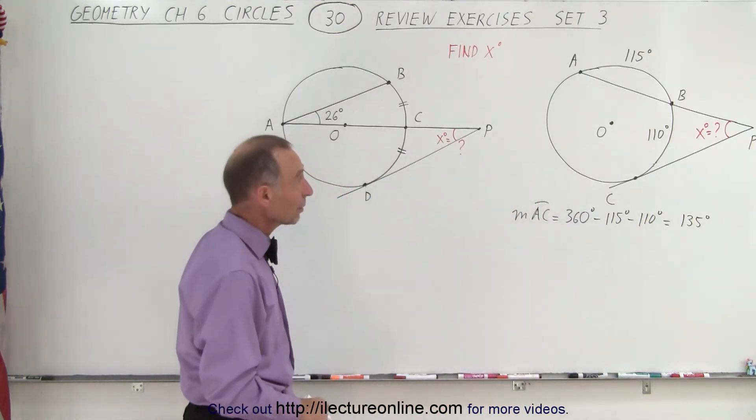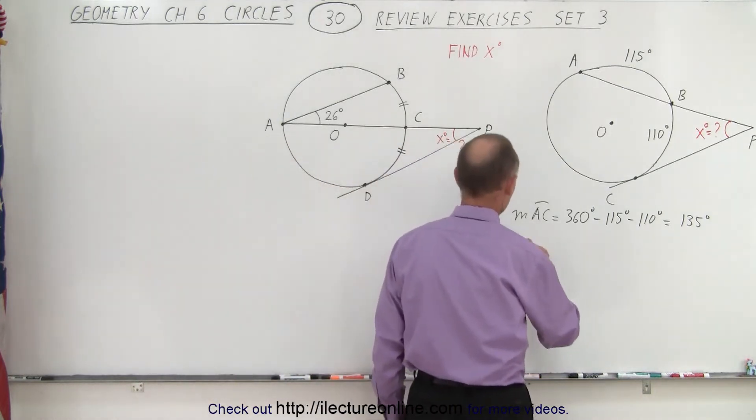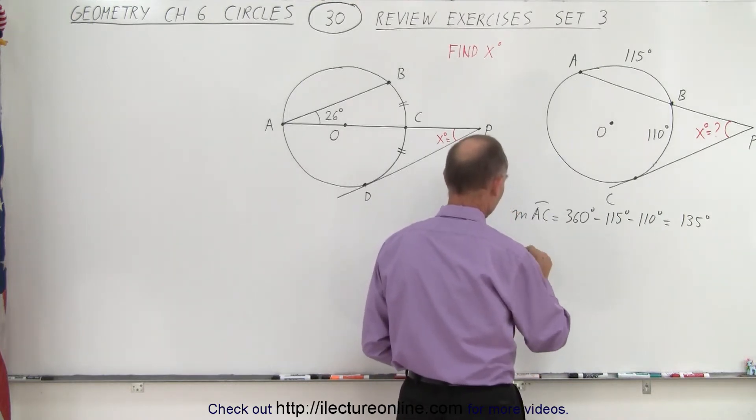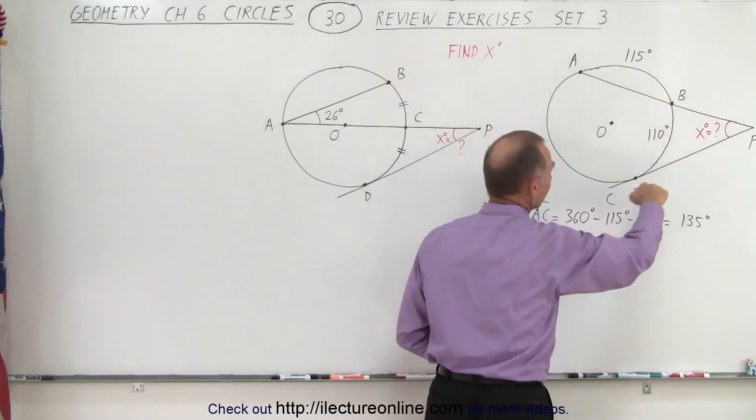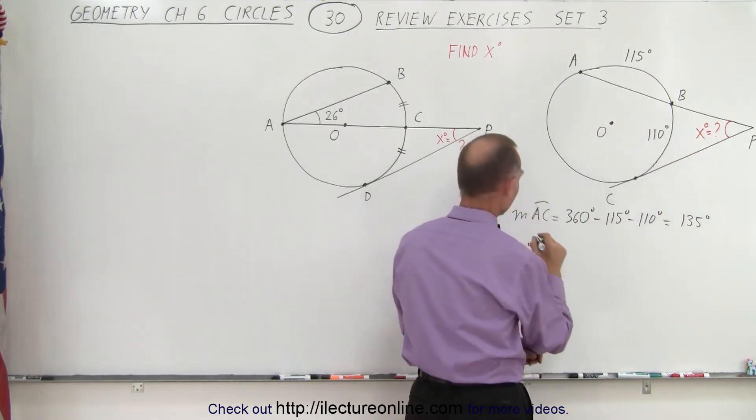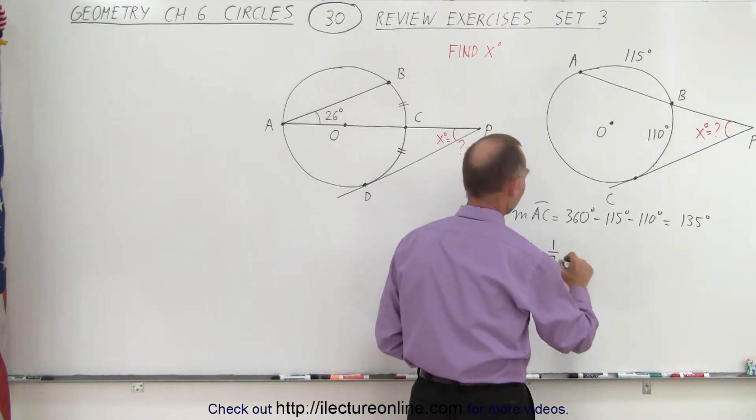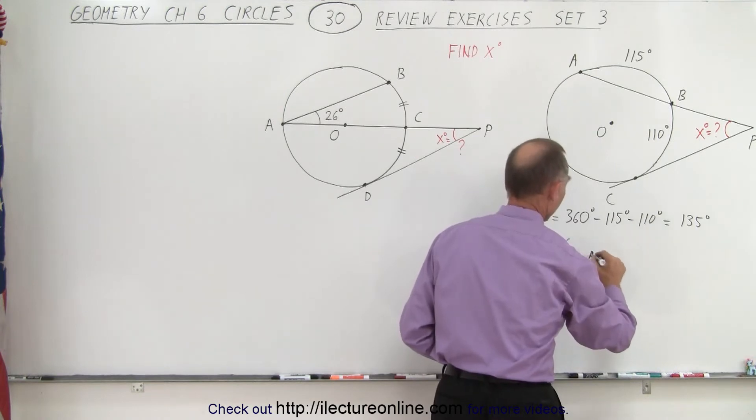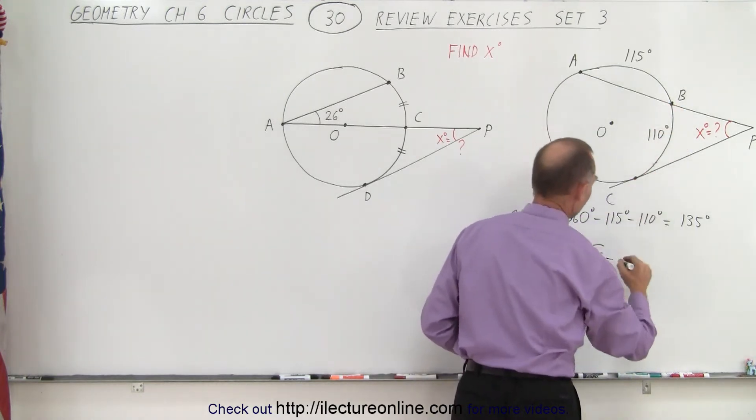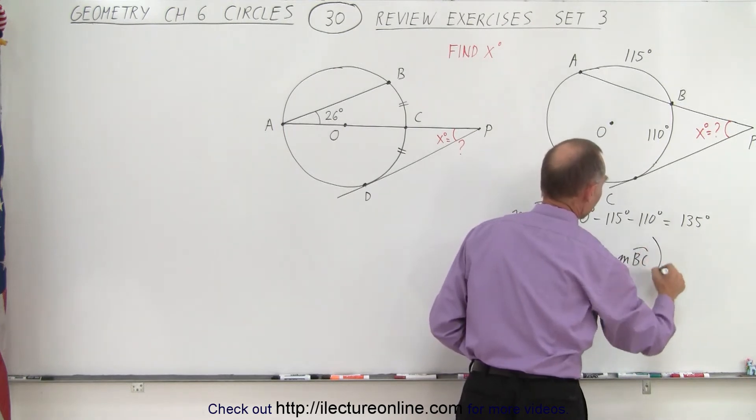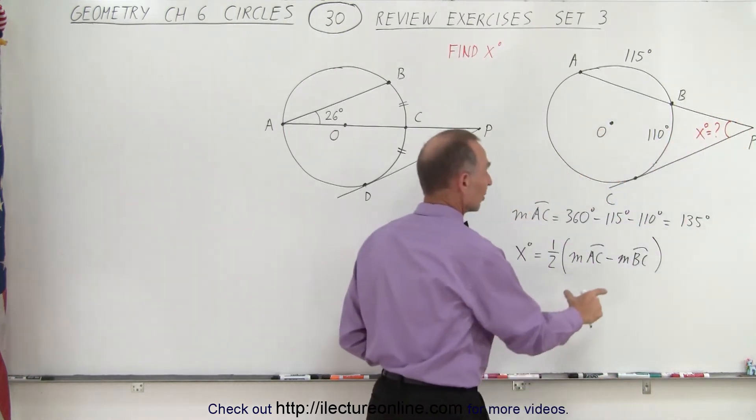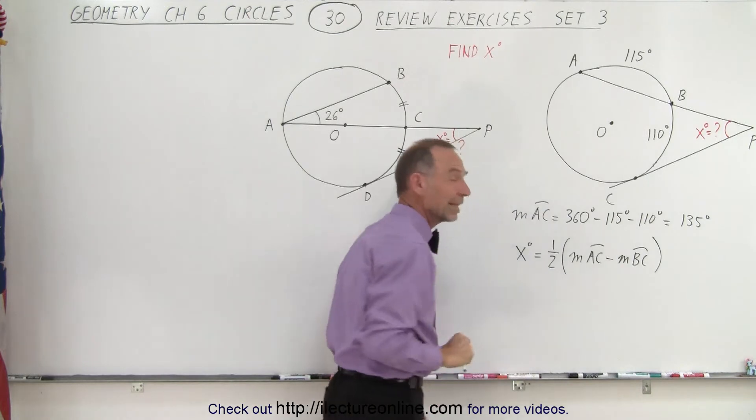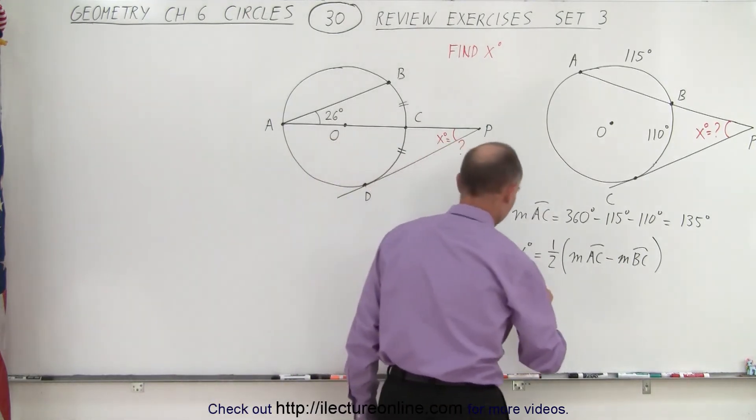So now the next thing we can do is the following. We can say that the measure for x values, actually we can just simply write it as the x value. So the measure for the angle from B, P, C, that's the same as the value for x, must equal one-half the measure from A to C minus the measure from B to C. That's because this angle lies outside the circle, so we subtract the two arc lengths from A to C and from B to C, and then we take half that result.